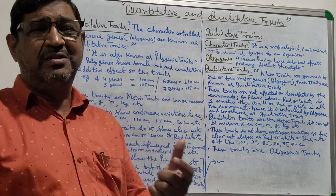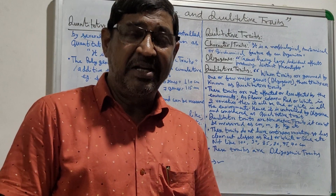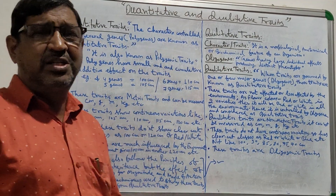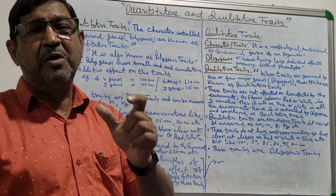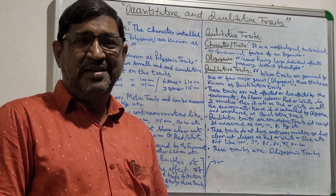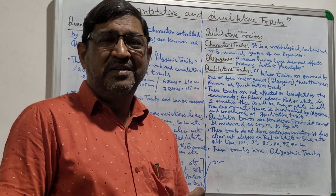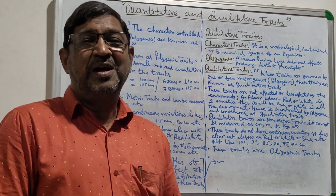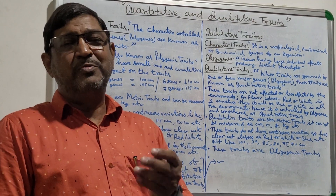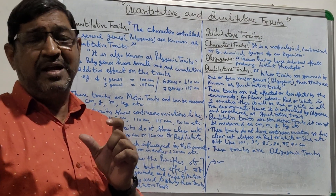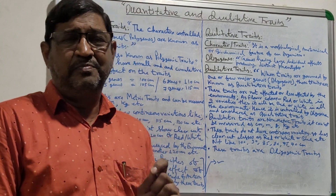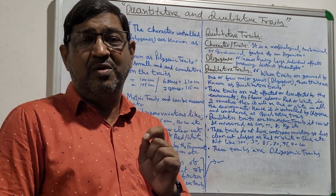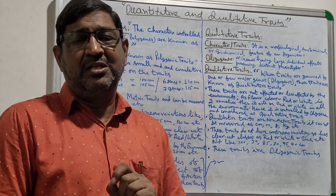To know that a trait is controlled by many genes, you have to make crosses and observe the gene action and the number of genes controlling the trait. But based on the characteristics of a particular trait you can judge it as a polygenic trait. Majority of the agronomic traits are quantitative traits — they are governed by many genes, polygenes, polygenic in nature.